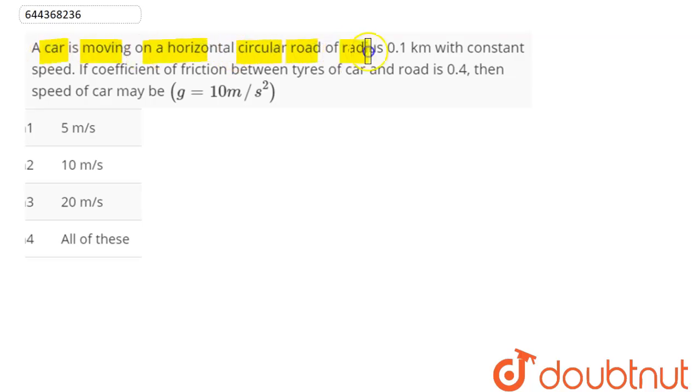on a horizontal circular road of radius 0.1 kilometer with constant speed. If coefficient of friction between tires of car and road is 0.4, then the speed of the car may be. So we have here that, let's say, this